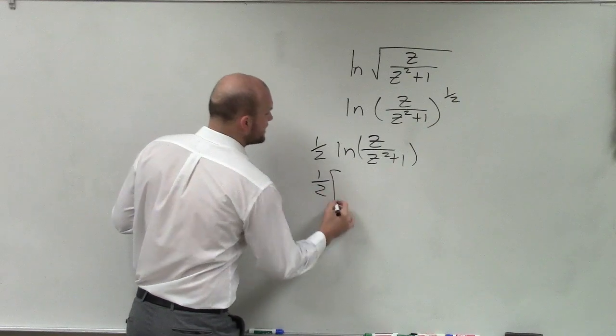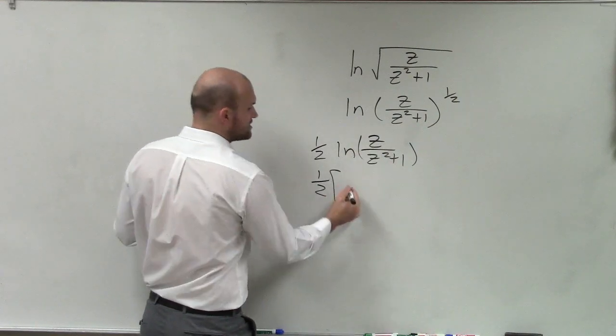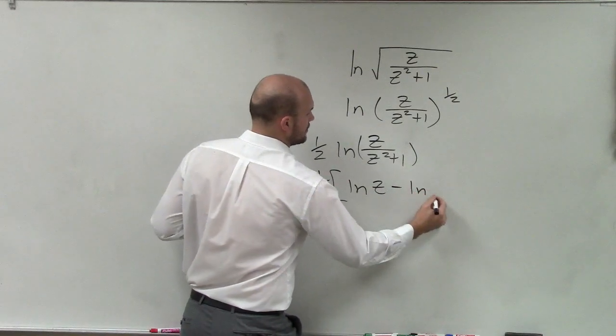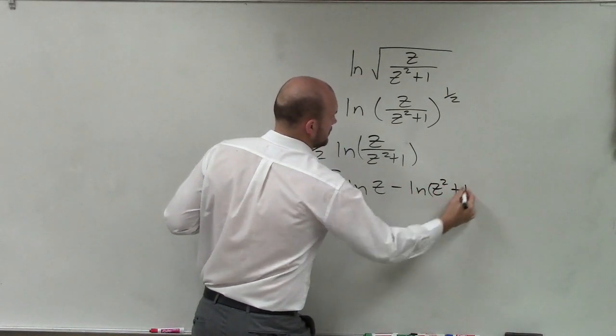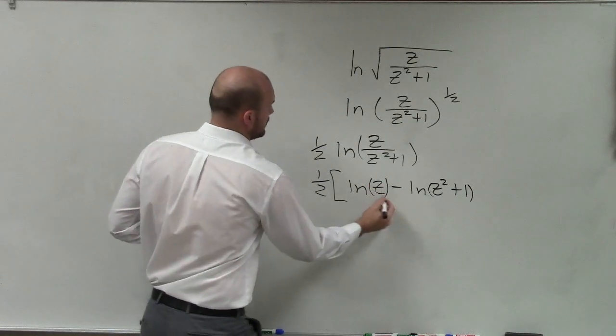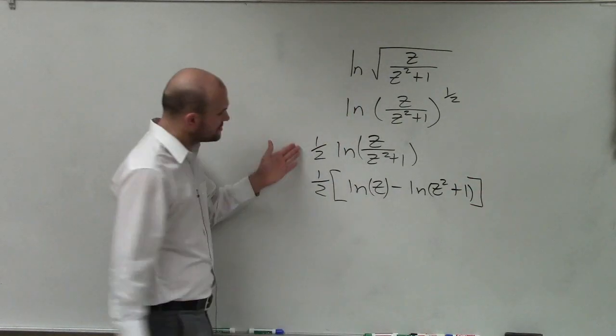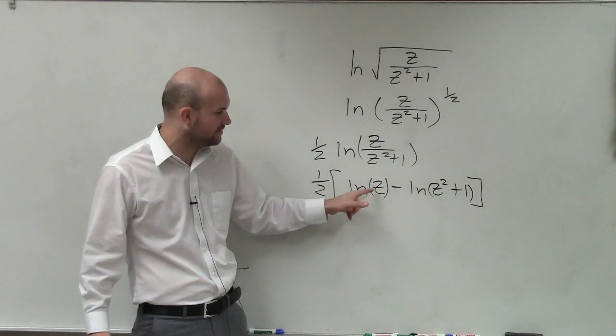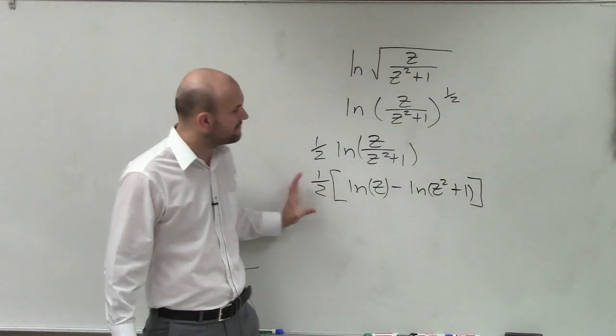Now, the next thing I'm going to want to do is I'm going to include a bracket, because now I'm breaking this up into two different logarithmic expressions. So make sure that this is 1 half times all of this. You just don't want to put the 1 half in front of the ln of z. You've got to put the 1 half in front of everything.